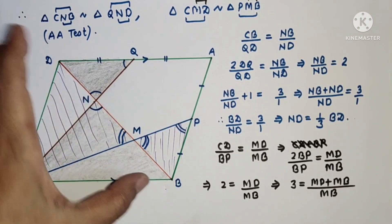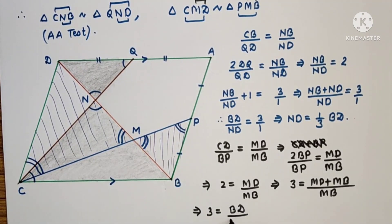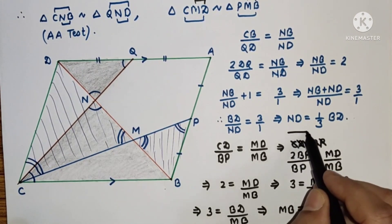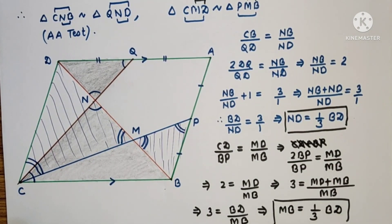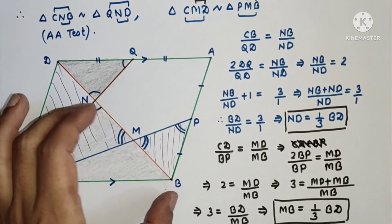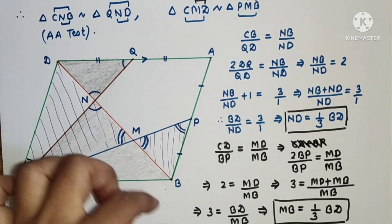Since MD plus MB equals BD, we get BD by MB equals 3, so MB equals one third of BD. Since ND is one third of BD and MB is one third of BD, the remaining part NM is also one third of BD, because one third plus one third plus one third equals three thirds, which is the complete BD.